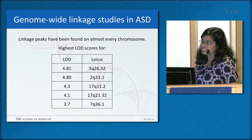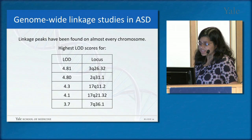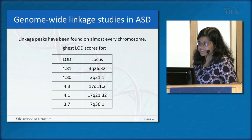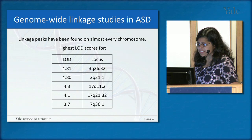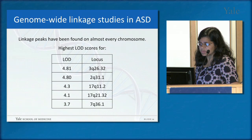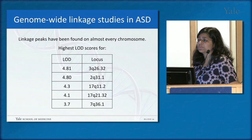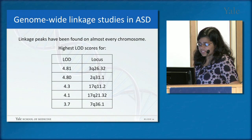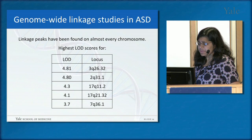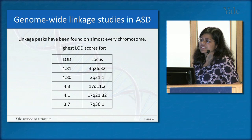In autism specifically, linkage peaks have been found on almost every chromosome. Some of the highest LOD scores — for example, 4.81 on the long arm of chromosome 3, and others on chromosomes 2 and 17 — have been reported across at least 15 genome-wide linkage studies. The problem is that many of these studies don't confirm each other — they find different sets of linkage peaks.